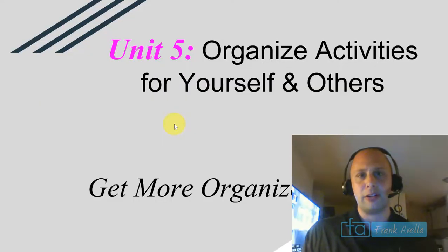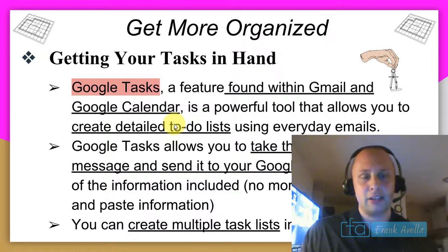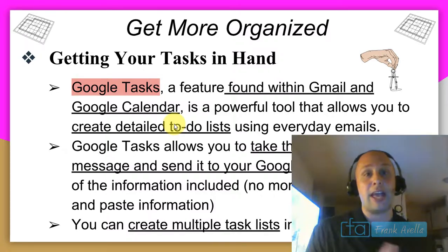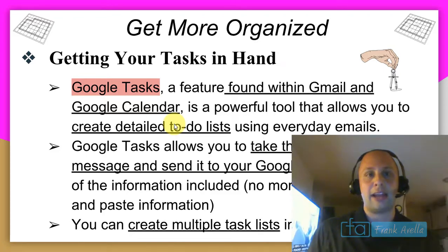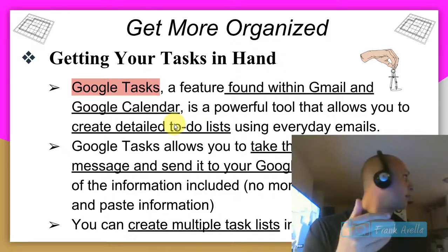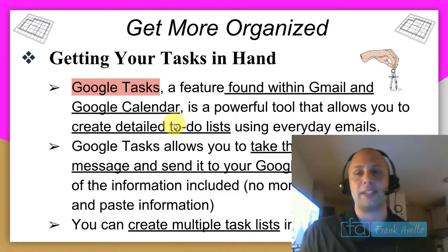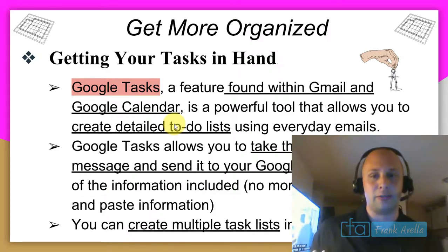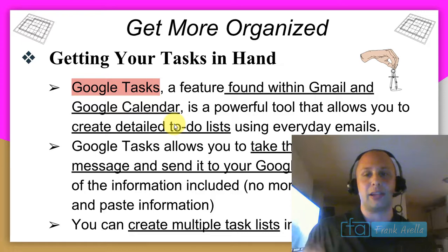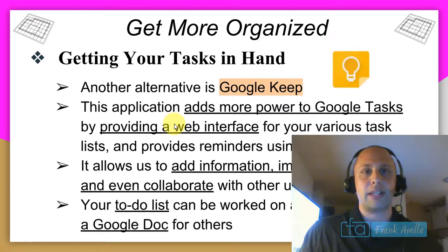Now we move to Unit 5, Part 2: Getting More Organized — focusing on Google Tasks. Google Tasks is a feature found in both Gmail and Google Calendar. It allows you to create to-do lists, send email message content to your calendar, and create multiple task lists.